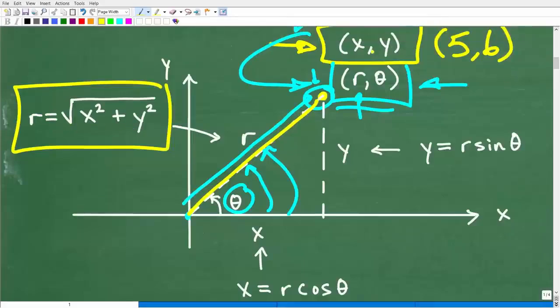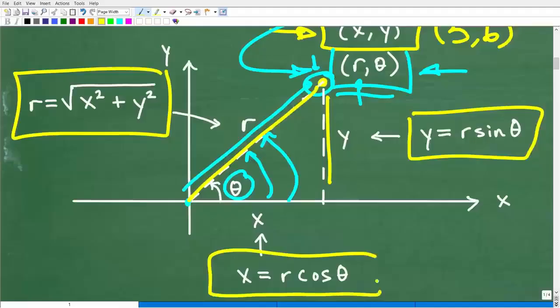So these x squared and y squared, again, is from our rectangular system. And y, the y-coordinate, is equal to r sine theta. And the x-coordinate is equal to r cosine theta.